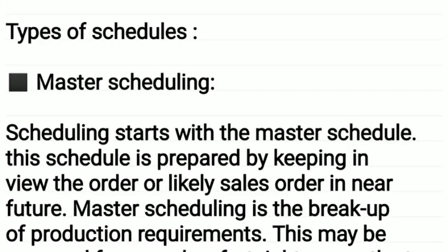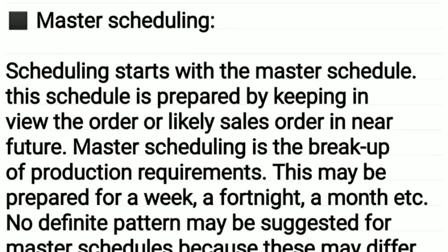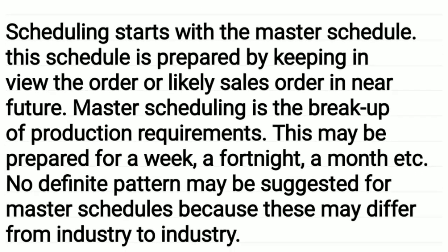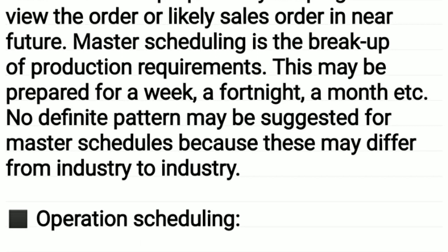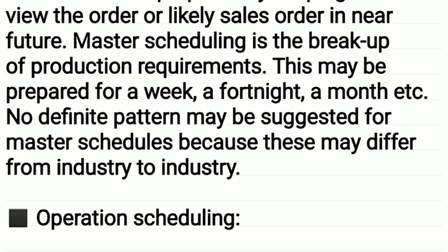Types of schedules: master scheduling. Scheduling starts with the master schedule. This schedule is prepared by keeping in view the order or likely sales order in the near future. Master scheduling is the breakup of production requirements. This may be prepared for a week, a fortnight, a month, etc. No definite pattern may be suggested for master schedules because this may differ from industry to industry.